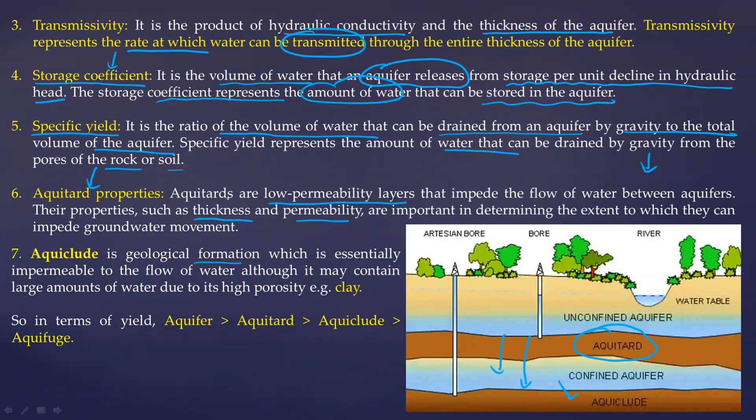And the last one is aquiclude. You see here aquiclude. It is a geological formation or rock which is essentially impermeable. It doesn't allow the water to go further. This is very important to contain the water table. Here you observe that this is the sequence in terms of yield. This could be a multiple choice question in some examination. Remember aquifer the greatest, then aquitard, then aquiclude, then aquifuge. This is the sequence here in terms of yield. Maximum is aquifer that allows the water to go inside.